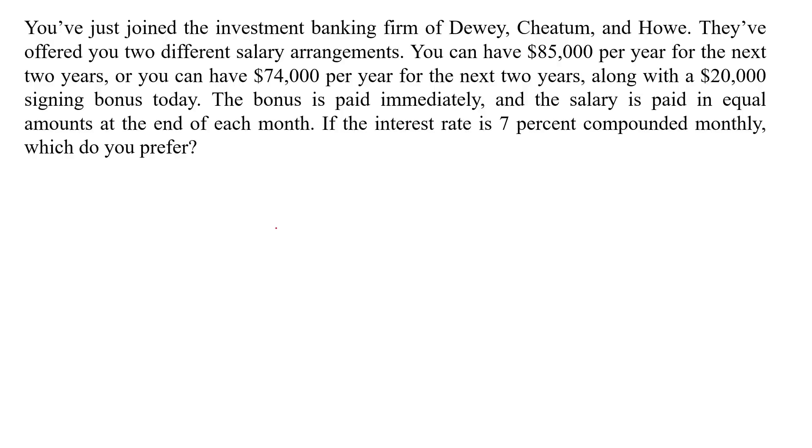You have just joined the investment banking firm of Dewey, Cheetan and Hui. They have offered you two different salary arrangements. You can have $85,000 per year for the next two years, or you can have $74,000 per year for the next two years along with a $20,000 signing bonus today. The bonus is paid immediately and the salary is paid in equal amounts at the end of each month. If the interest rate is 7% compounded monthly, which do you prefer?